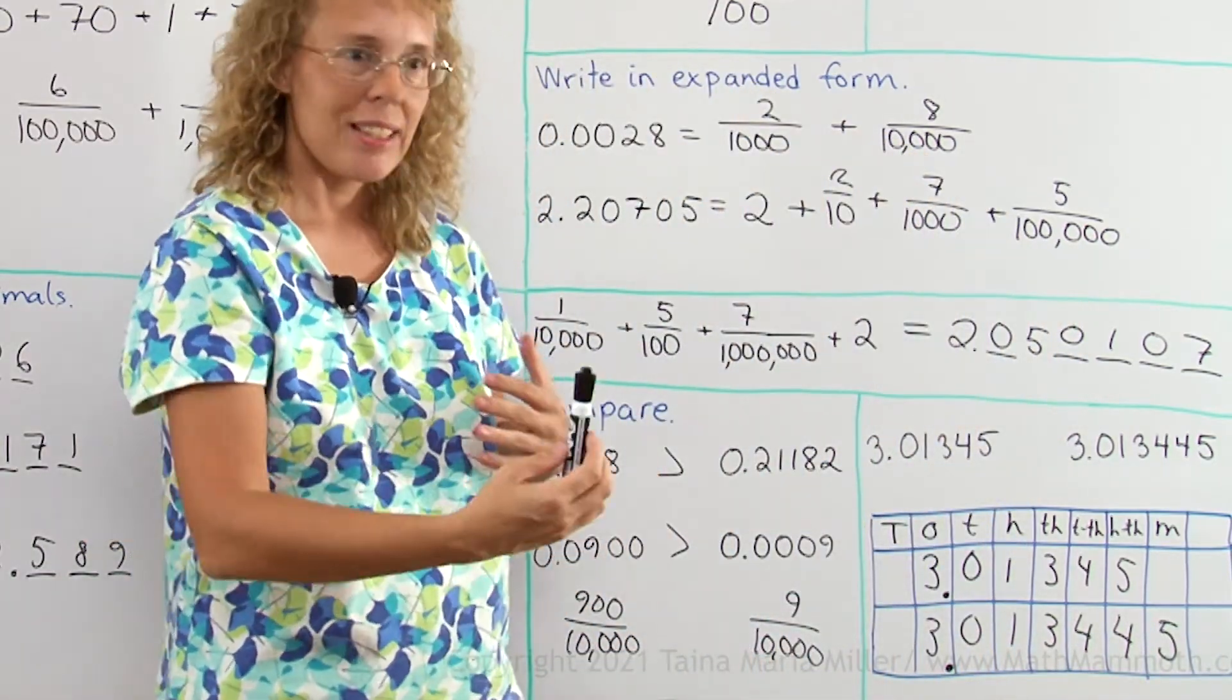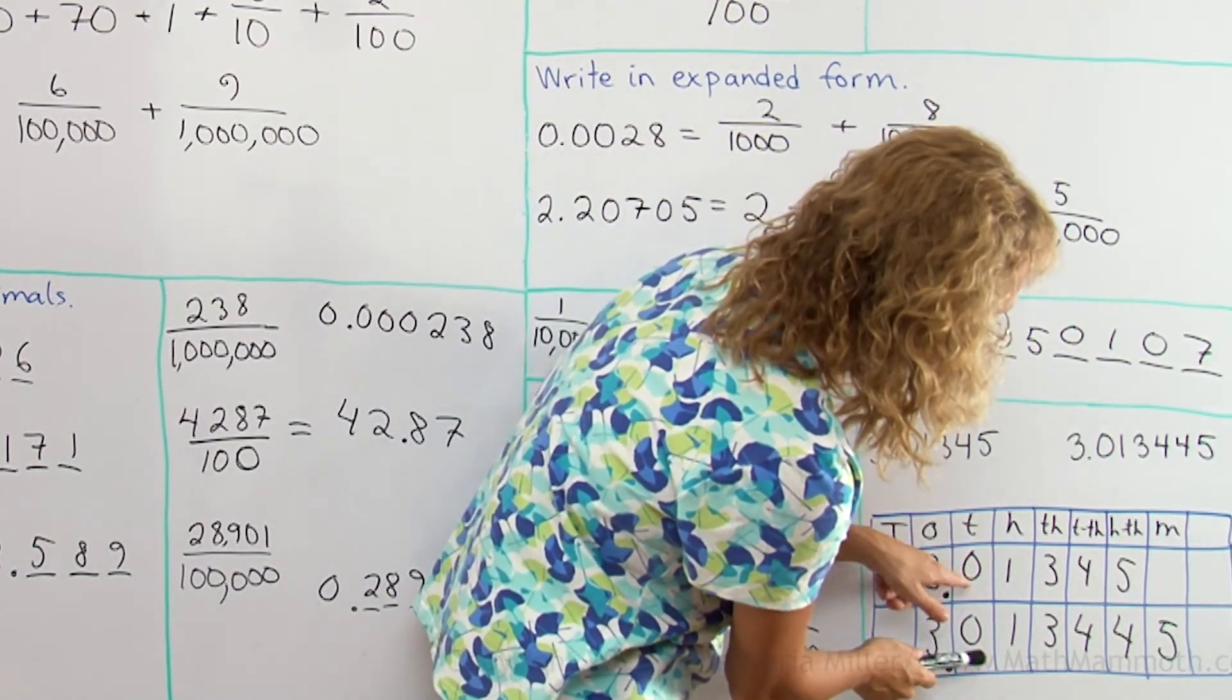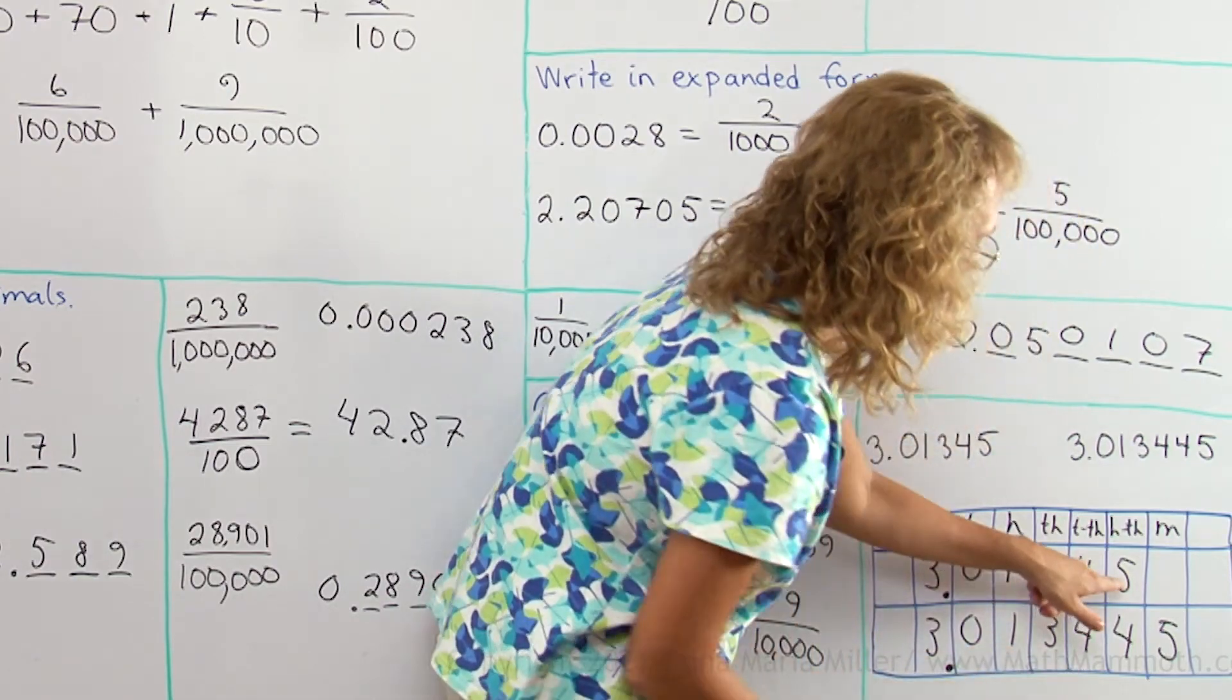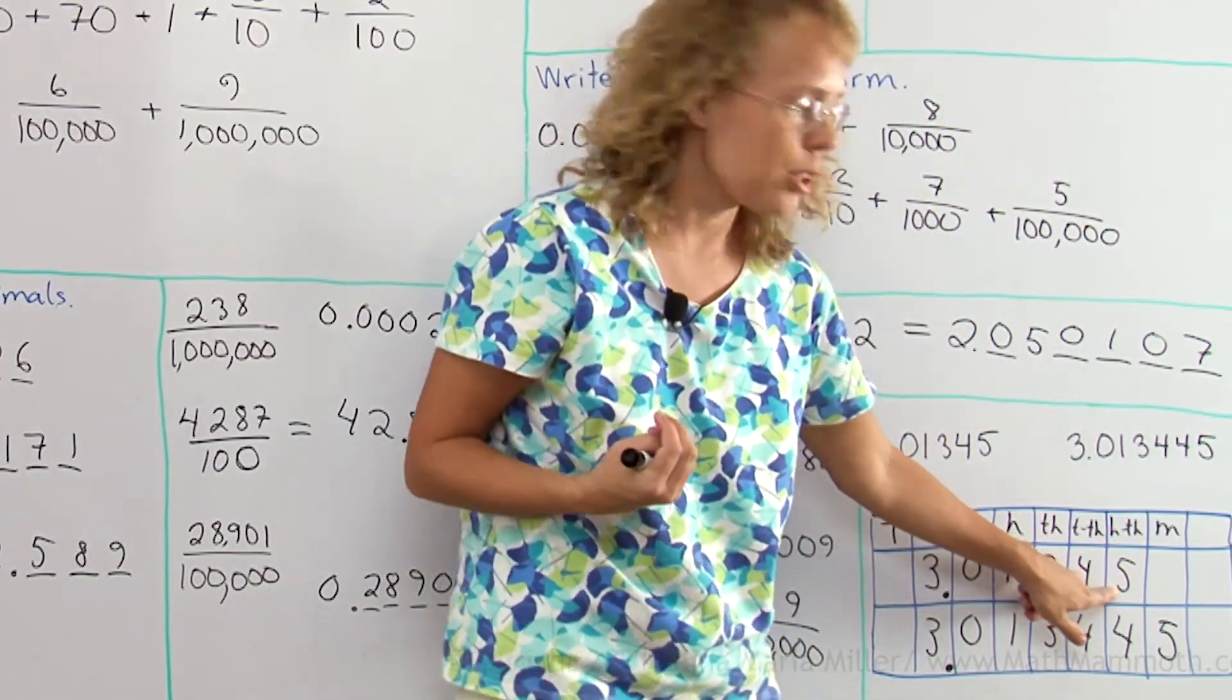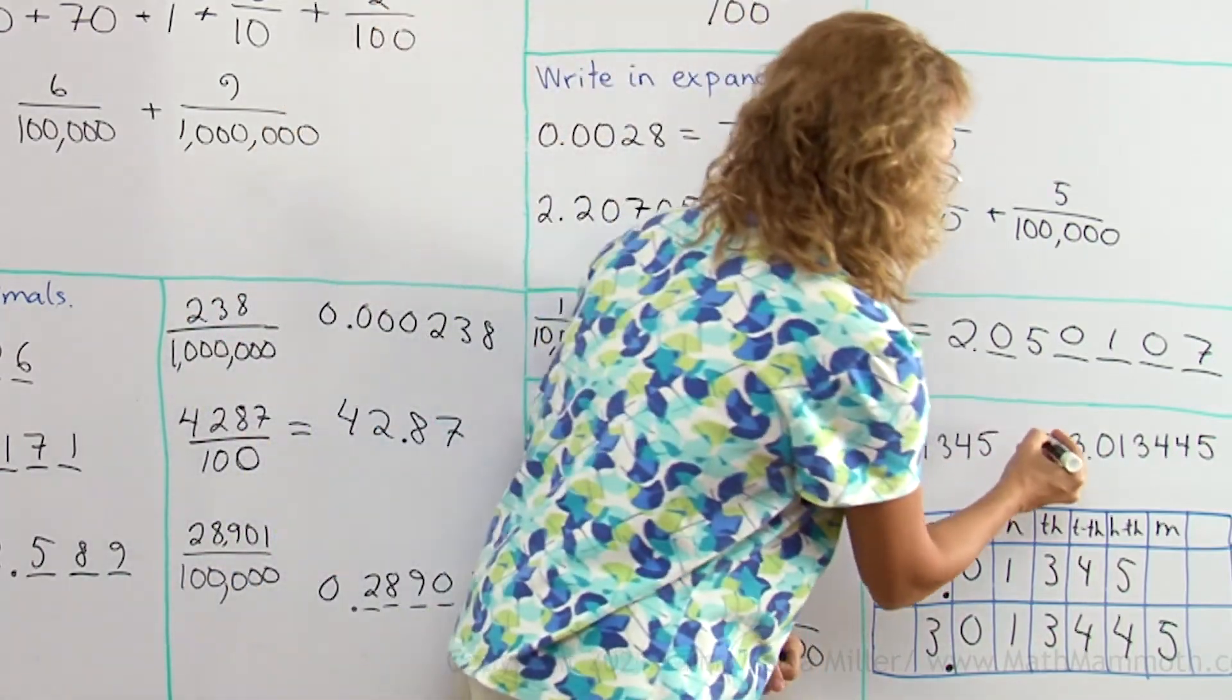And now you compare place by place. You study, okay, same amount of ones, the same amount of tenths, and hundredths, and thousandths, and ten-thousandths. And the difference comes here in the hundred-thousandths place. This top number has more of those, so that one is bigger or more.